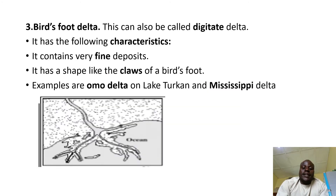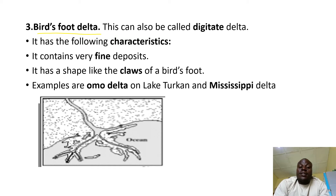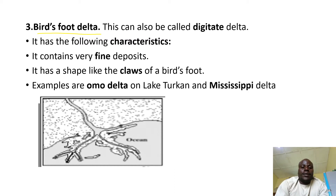Then we have the bird's foot delta. This one looks like the foot of a bird. It contains very fine deposits. It has a shape like the claw of a bird — that's why it gets its name, bird's foot delta. An example can be seen on the Mississippi River. This is the illustration of the bird's foot delta. It looks like the foot of a bird, as simple as that.